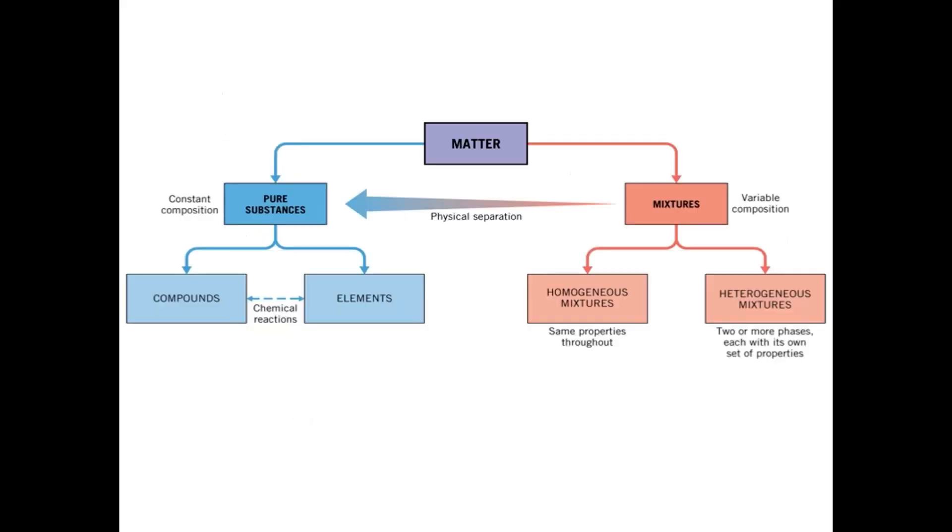This flowchart provides a quick visualization of some of the concepts I discussed in this lecture. Matter can be categorized as either pure substances or mixtures. These mixtures can be subcategorized into homogeneous or heterogeneous mixtures. Mixtures can undergo physical separation to give back to the pure substances that created them. Now, pure substances can also be subcategorized into compounds and elements. These elements can undergo chemical reactions to become compounds or vice versa. This is a concept we're going to visit in future lectures.